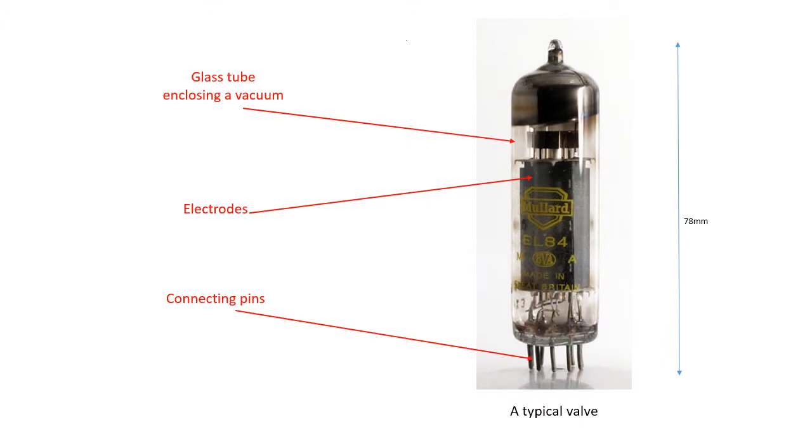A valve, also known as a tube in the USA, is an electronic device that controls the flow of electric current between electrodes. They are used to detect and amplify, that is, make larger, an electrical signal such as a radio signal.